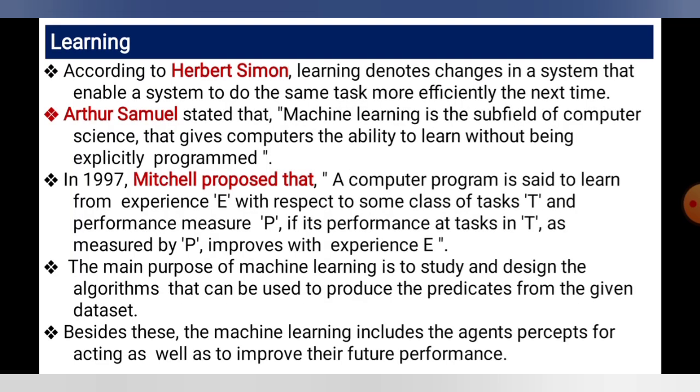According to Herbert Simon, learning did not change the system but enabled it to do the same task more efficiently next time. Arthur Samuel stated that machine learning is a field of computer science that gives computers the ability to learn without being explicitly programmed. In 1997, Mitchell proposed that a computer program is said to learn from experience E with respect to some class of tasks T and performance measure P, if performance on tasks T as measured by P improves with experience E.